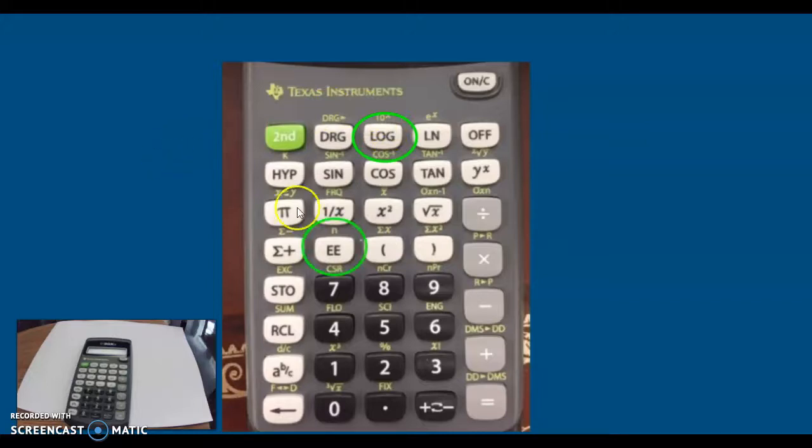The second button you'll need is this EE key. That's how we're going to do our scientific notation. This will allow us to more easily input scientific notation where you don't have to type the whole thing out.